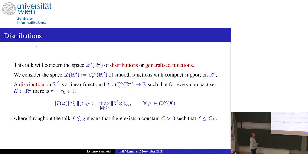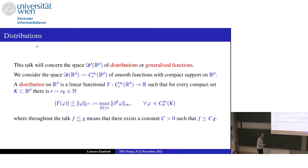We need to introduce distributions or generalized functions in a more precise way. D prime is the dual space of D of R^d, which is the set of C-infinity functions with compact support on R^d. A distribution on R^d is a linear functional T on this space such that for every compact set there is some integer — which can depend on the compact — such that T is continuous in the C^r norm.